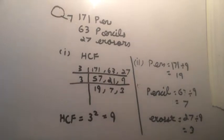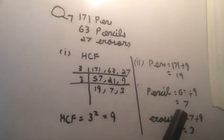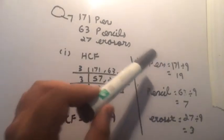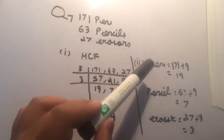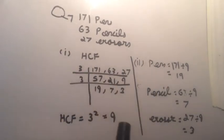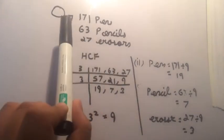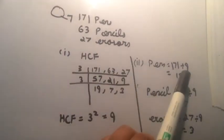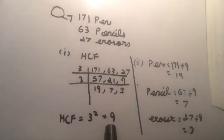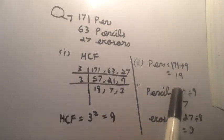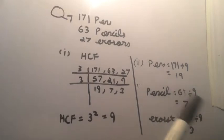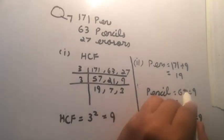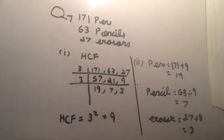The second part asks for the number of each item in a gift bag. We have to equally fit these numbers into gift bags, so we divide each by 9 that we got from HCF. We divide 171 by 9, then 63 by 9, and then 27 by 9 to get the answers for the second part.